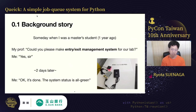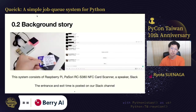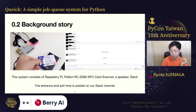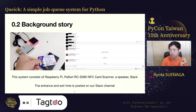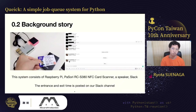Our university requested laboratories to track students' entrances because of the COVID-19 situation. And I answered, 'Yes, sir.' Two days after this conversation, it was done. The system status was all green. The system consists of a Raspberry Pi, a card reader to scan a student card — its name is Passery — and a tiny speaker to notify students that the system is working. The entrance and exit time is posted on our Slack channel, and it's still working even after I graduated.